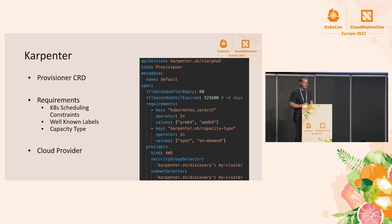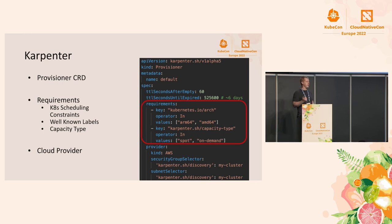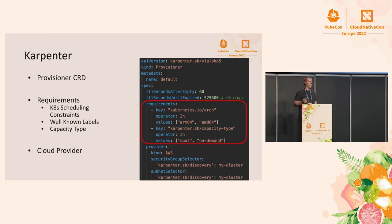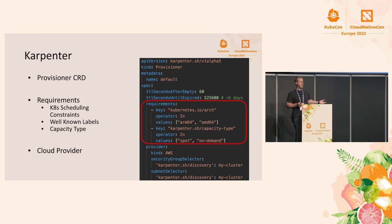Karpenter is completely Kubernetes-native, so there's no external infrastructure to set up other than a few permissions. We use a custom resource definition called the Provisioner. The main section of the spec is the requirements, which uses the same Kubernetes requirements APIs you're familiar with from pod spec affinities. For example, the Kubernetes.io/arch label is a well-known label to set CPU architecture. This provisioner is flexible to both x86 and ARM64 architectures. If you build your containers for both architectures, Karpenter will union all instance types supporting those two architectures and pass them to EC2 to make the best decision — which works really well with the capacity-optimized allocation strategy for Spot.